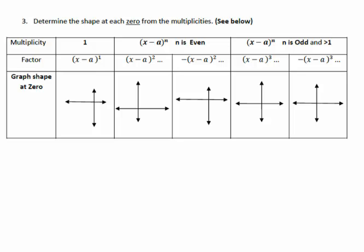There are some new pieces as well. We want to determine the shape at each zero, and the shape comes from the multiplicity. If we have a multiplicity of one, think about a linear function — we get a straight line through that a value.